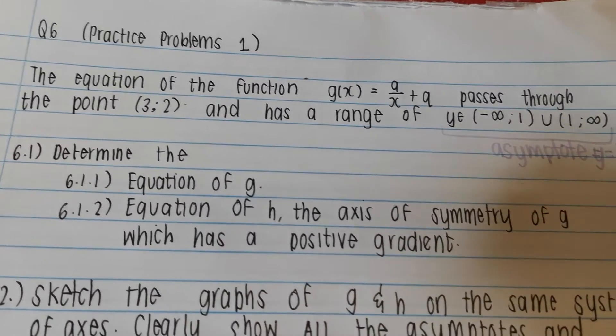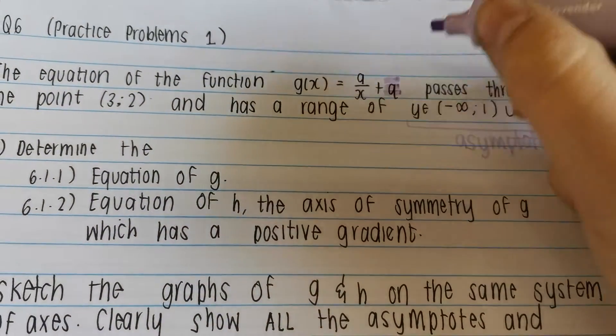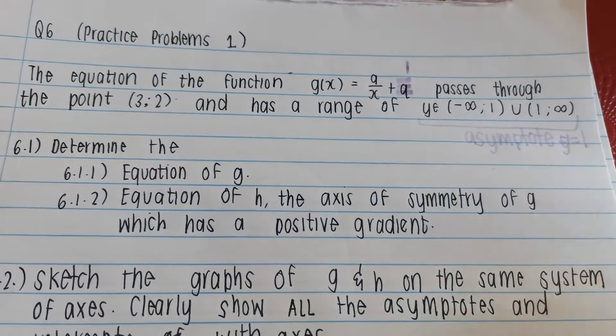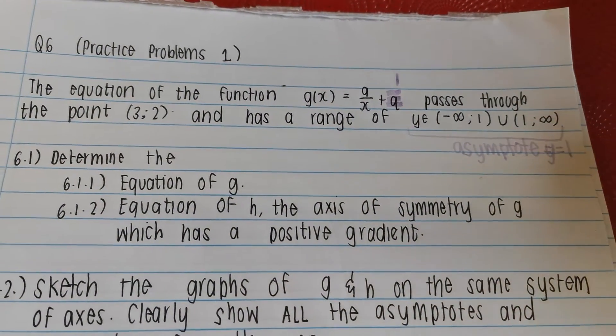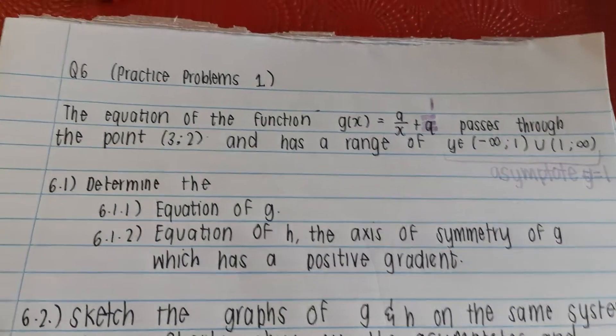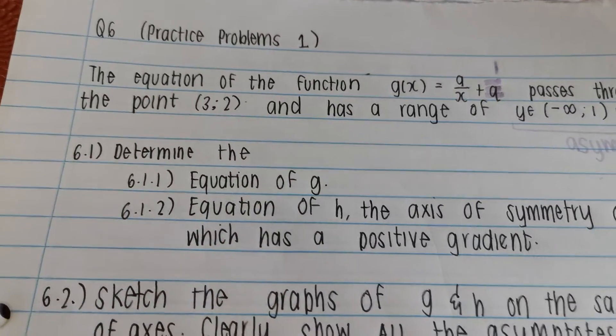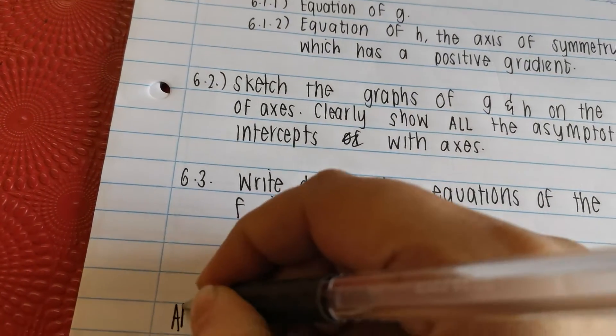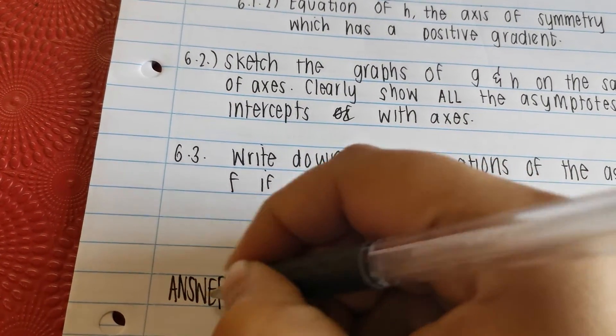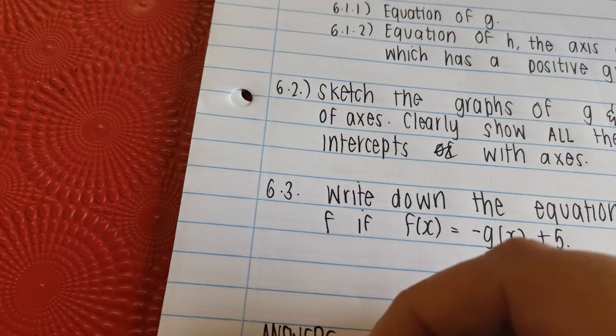We also know that this asymptote value that we just figured out is basically this value over here. It must be 1, isn't it? Because we know that the q value in the hyperbola stands for the asymptote. Last question says, determine the equation of g. Let's write this down, write your answers. For g, 6.1, point 1.